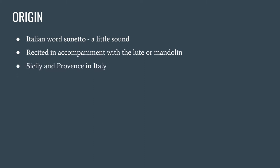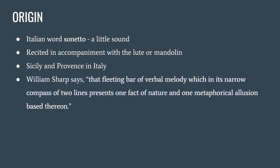The origin of the sonnet is uncertain. Some scholars say it originated from Sicily and Provence in Italy. William Sharp holds the view that it was sung by Sicilian peasants — that fleeting bar of verbal melody which, in its narrow compass of two lines, presents one fact of nature and one metaphorical allusion based thereon.